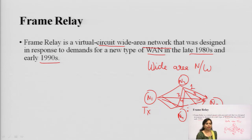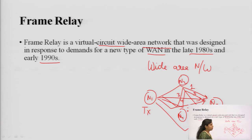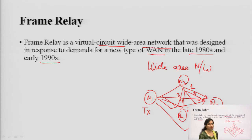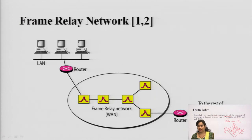A virtual circuit is created on a demand basis. Once a path is selected from transmitter to receiver, that network is created only for the duration of the transmission. It will not wait for intermediate nodes. That is the virtual circuit concept, and with this increasing demand, Frame Relay was proposed and designed in the late 1980s and early 1990s.